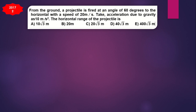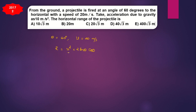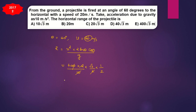Moving to the next question: from the ground, a projectile is fired at an angle of 60 degrees to the horizontal with a speed of 20 m/s. Acceleration due to gravity is 10. The horizontal range is: R = u² × 2sinθcosθ / g = 400 × 2 × (√3/2) × (1/2) / 10 = 20√3 meters. The answer is C.